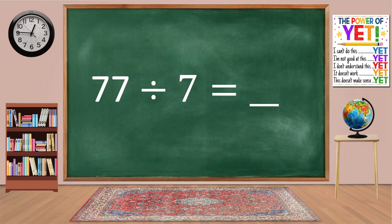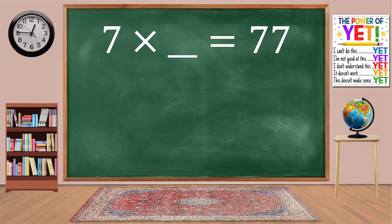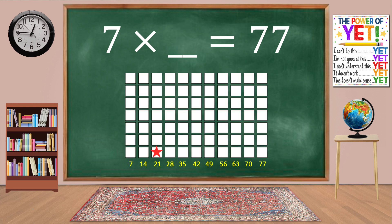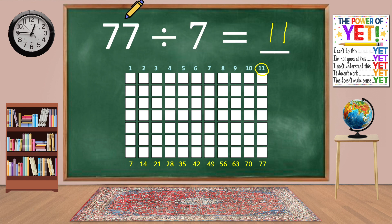77 divided by 7 equals blank. Our related fact is 7 times what equals 77? Skip count: 7, 14, 21, 28, 35, 42, 49, 56, 63, 70, 77. We have eleven columns. 7 times 11 equals 77. 77 divided by 7 equals 11.